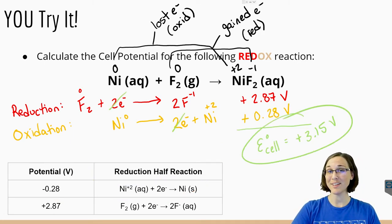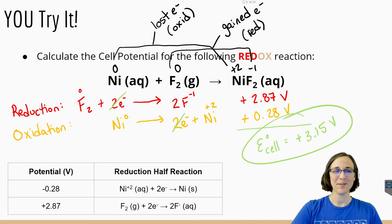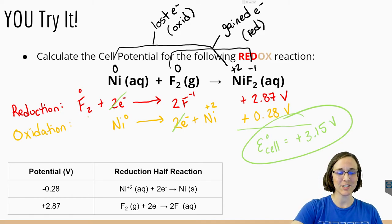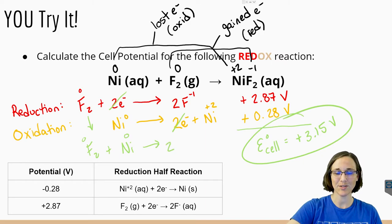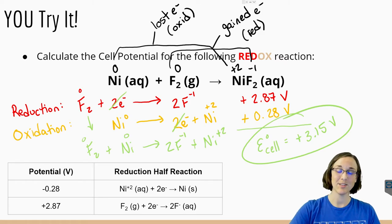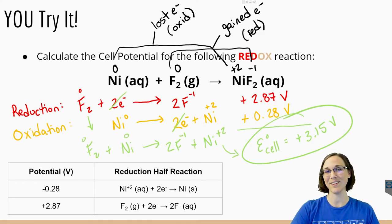Your final cell potential here should be plus 3.15 volts. The overall equation is F₂ plus nickel forming two F⁻ plus Ni²⁺, and that would be the overall equation and its associated voltage.